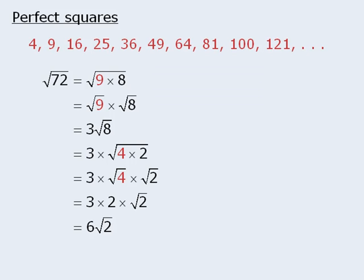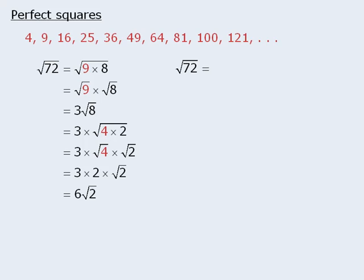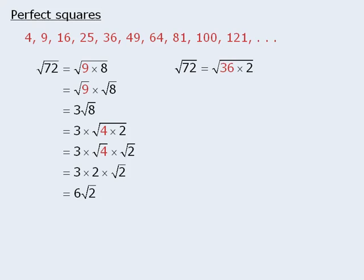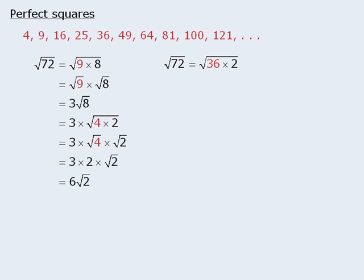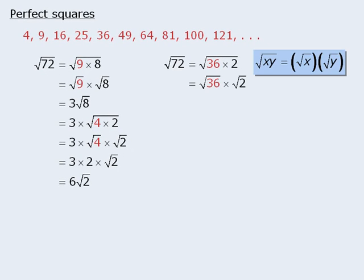We could have saved ourselves a lot of time by looking for the largest perfect square that divides into 72. Since 36 divides into 72, we can rewrite 72 as 36 times 2. When we apply this property, we get the square root of 36 times the square root of 2, which simplifies to be 6 root 2.